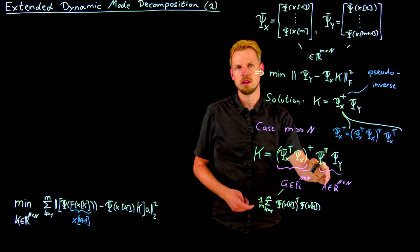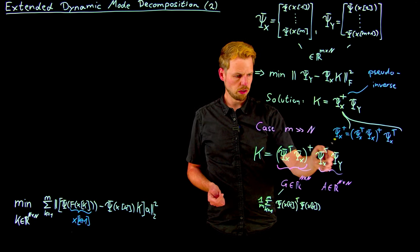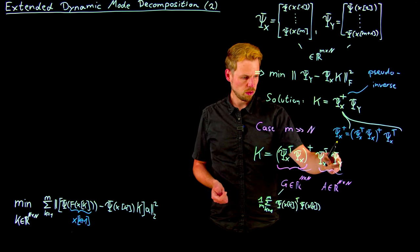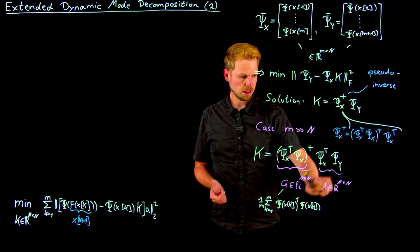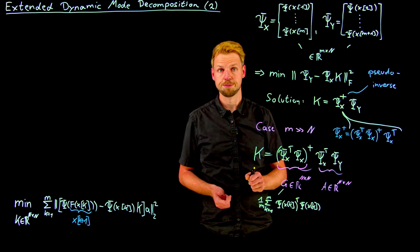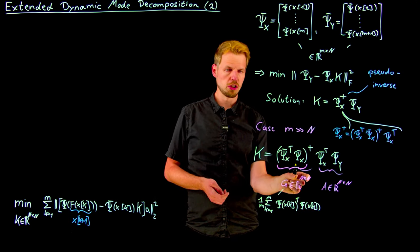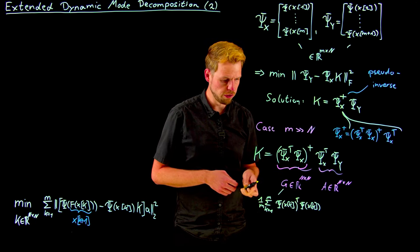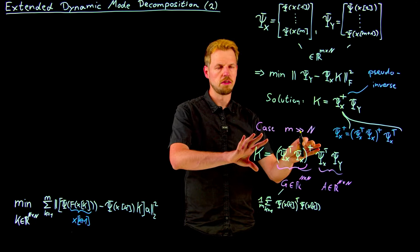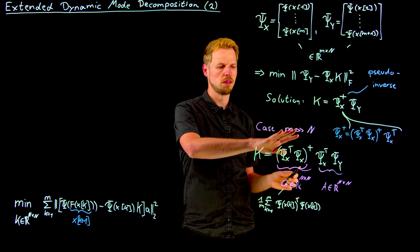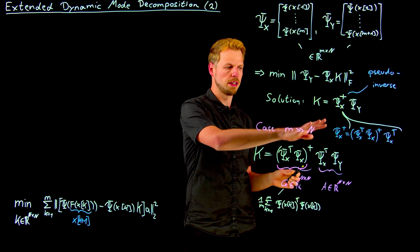And you get an equally simple correlation here, where you have, instead of the psi x k, the psi of x k plus 1. And calculating the pseudoinverse of this much smaller matrix is a lot more efficient. So this is advantageous in the setting more snapshots than dimensions.